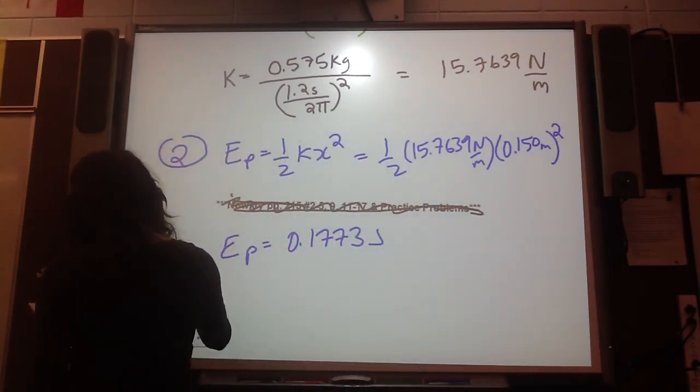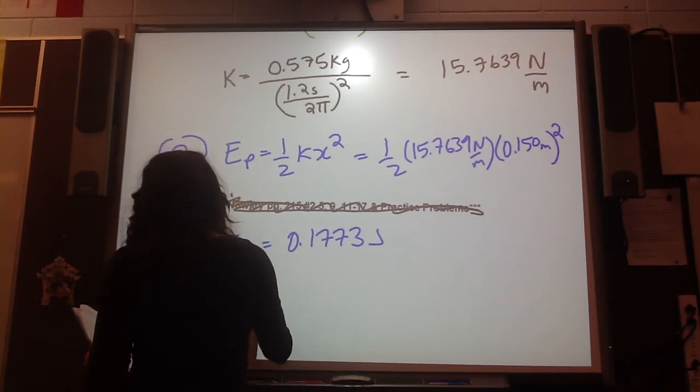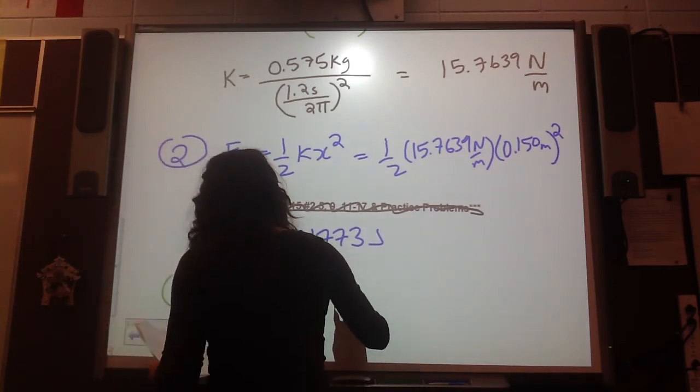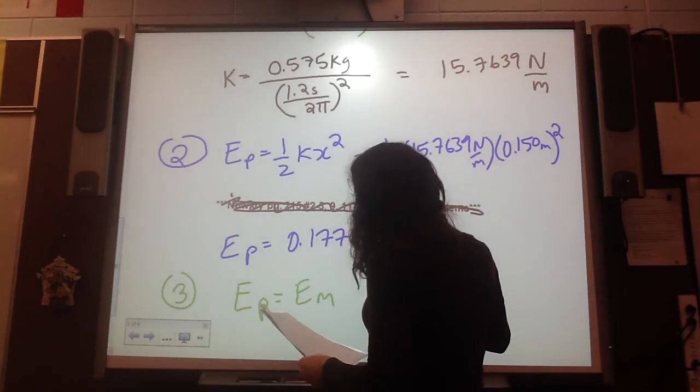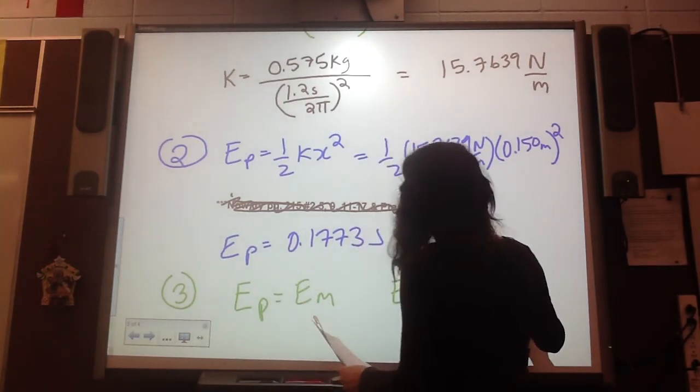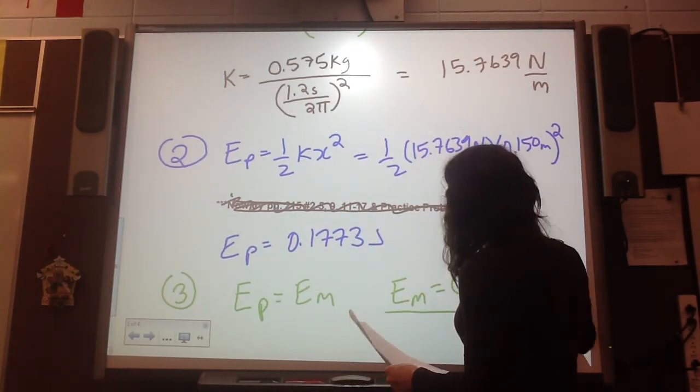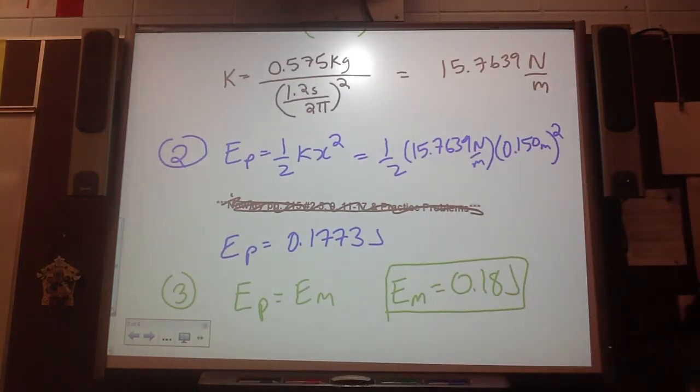And then my third kind of calculation or assumption was that EP is equal to EM. So I can say then that my EM at significant digits is 0.18 joules.